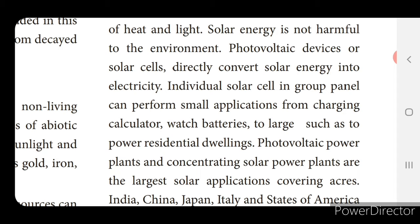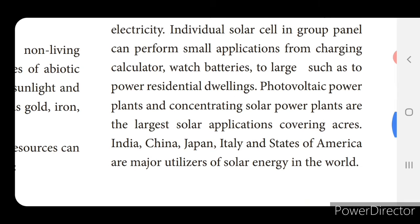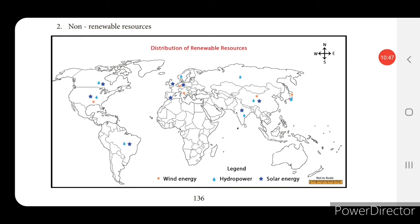Photovoltaic power plants and concentrating solar power plants are the largest solar applications covering acres. India, China, Japan, Italy and the United States are major utilizers of solar energy in the world. The distribution of renewable resources map shows wind energy, hydropower and solar energy locations in various places.